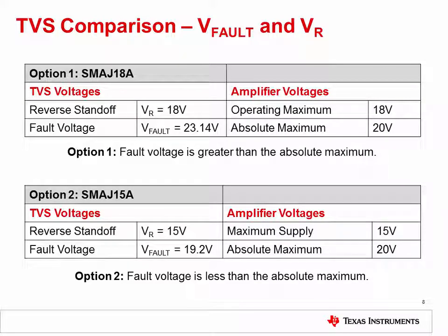We must now compare the TVS voltages to the op amp specifications. The TVS reverse standoff of 18 volts was selected to match the op amp operating supply voltage of 18 volts. We determined that the fault voltage is 23.14 volts using linear interpolation. For best protection, the fault voltage should be less than the op amp absolute maximum voltage. Unfortunately, this TVS fault voltage is above the op amp absolute maximum of 20 volts. In the second option, the op amp supply voltage is reduced to 15 volts, giving more margin between the maximum supply and the absolute maximum voltage. A new TVS is selected with a 15 volt reverse standoff, which results in a fault voltage of 19.2 volts — less than the op amp absolute maximum. Thus, this TVS diode will effectively protect against EOS events.